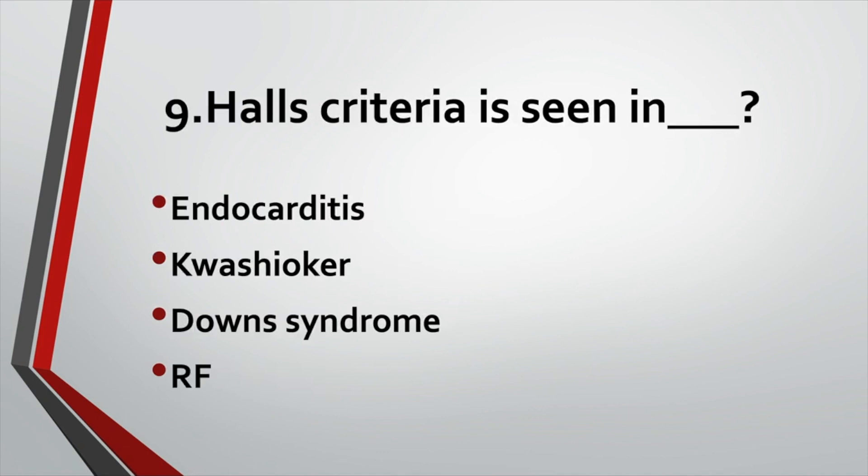Halt's criteria is for: Option A: Endocarditis. Option B: Kochioka. Option C: Down syndrome. Option D: Rheumatic fever. Answer: Option C, Down syndrome.